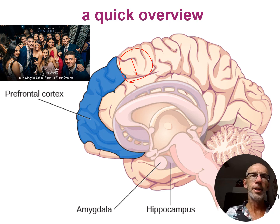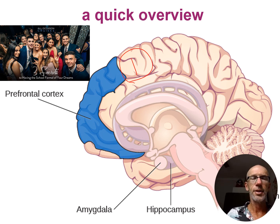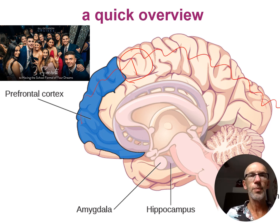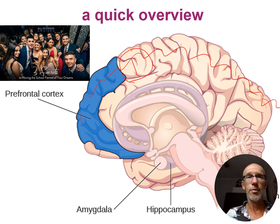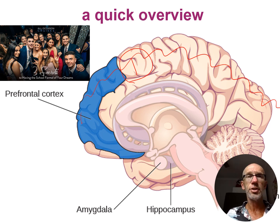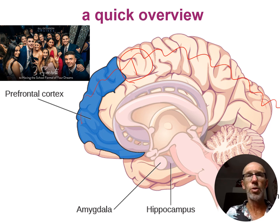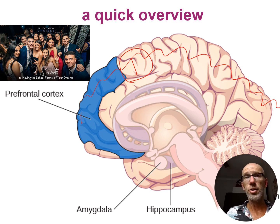We go to the formal and we form an initial impression of the event, and those initial impressions are stored in the neocortex in a variety of locations because there's a visual aspect of the formal — viewing everyone, the fashion, the layout of the room — there are auditory memories being formed in terms of the music and the conversations, and of course your prefrontal cortex is going to be very active in terms of guiding your conscious experience.